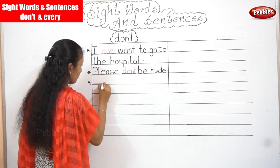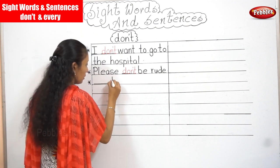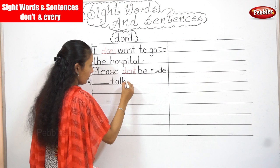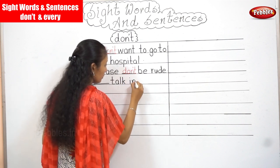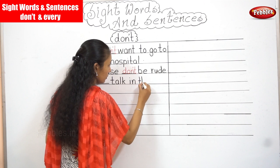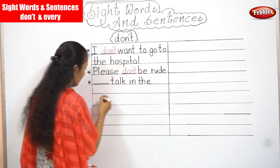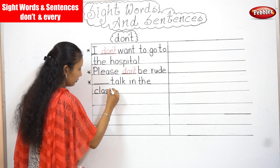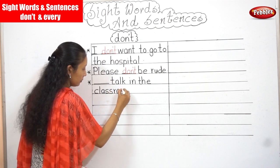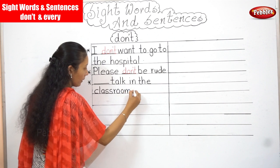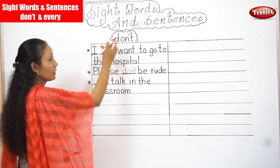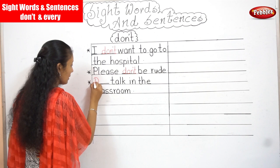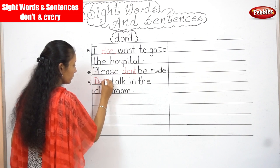Next one: — talk in the classroom. Again, the word that you need to join is 'don't'. So since you're starting the sentence, I will use the capital D: Don't talk in the classroom.